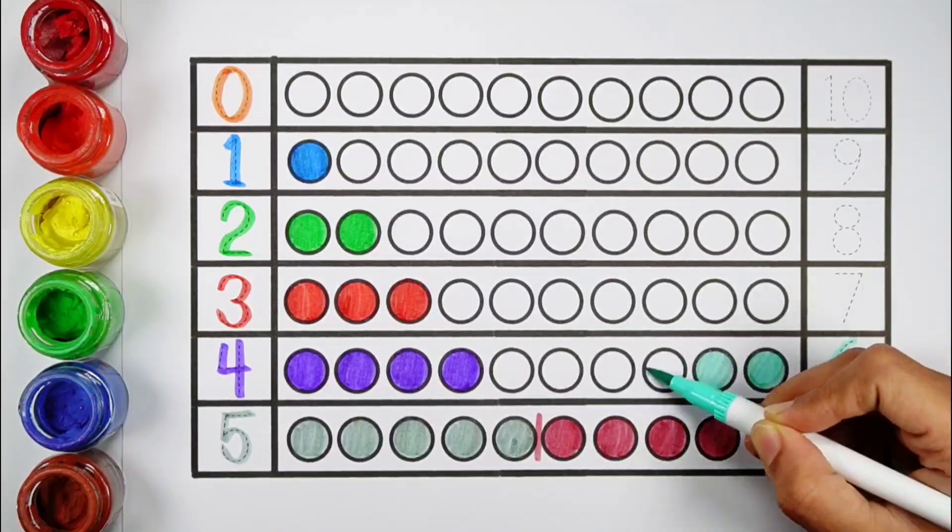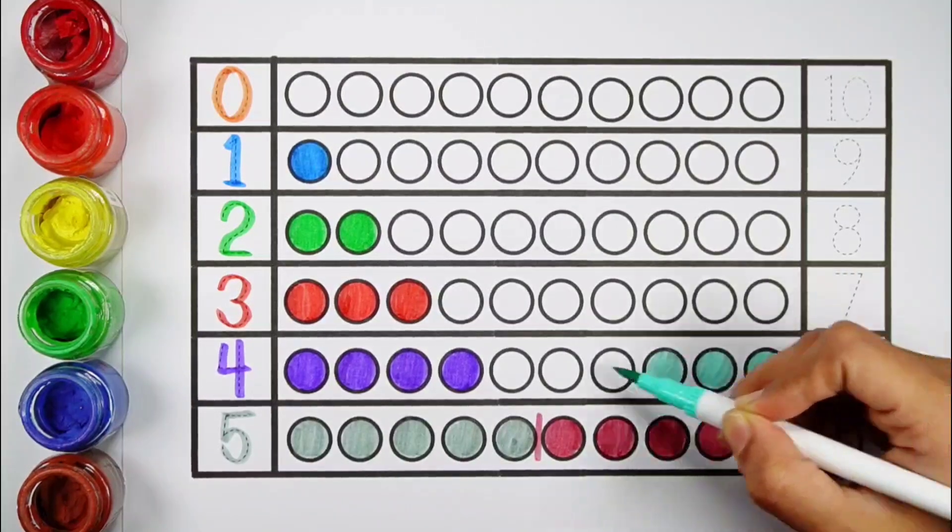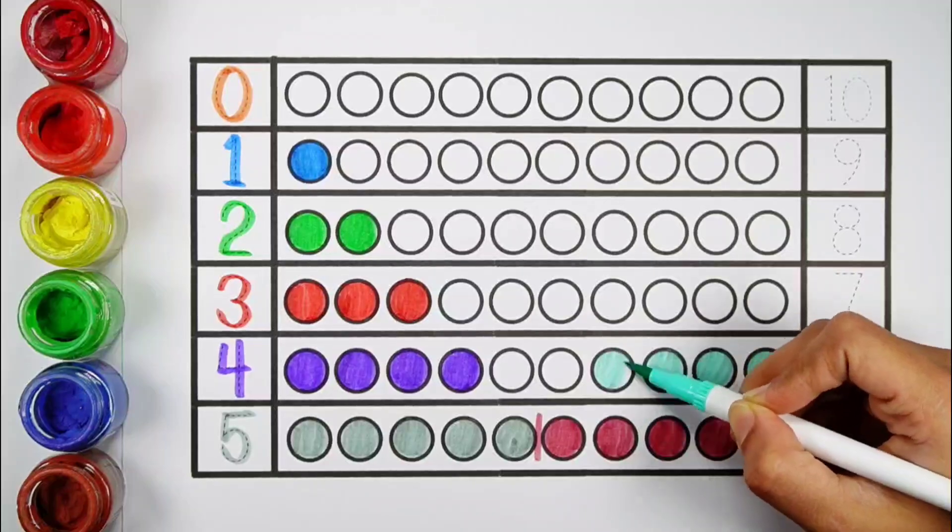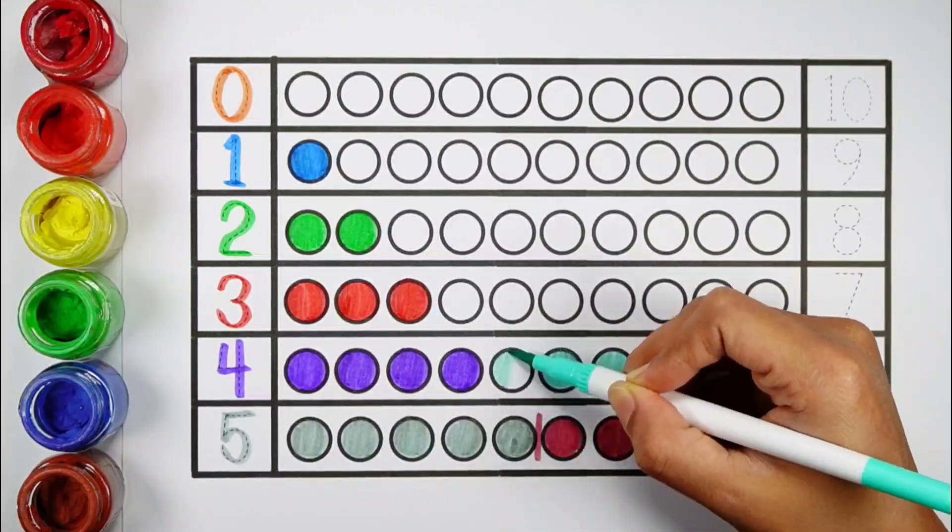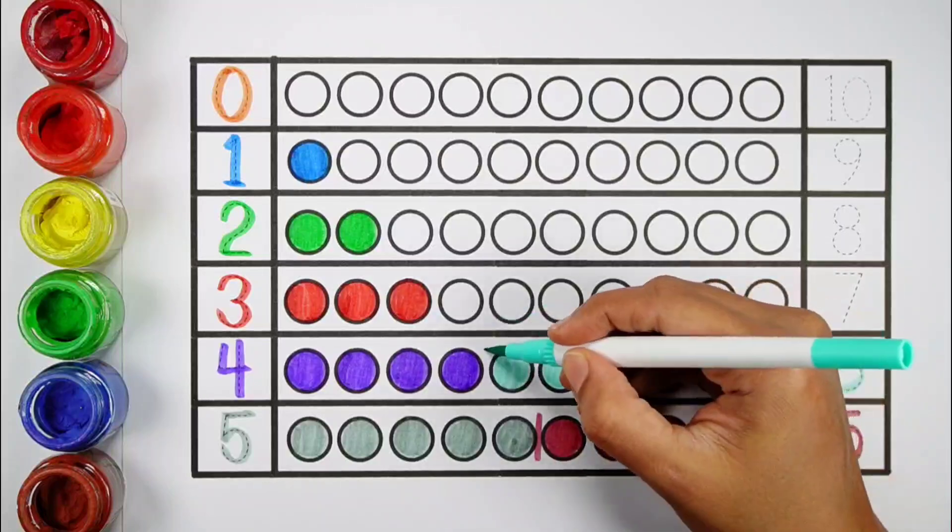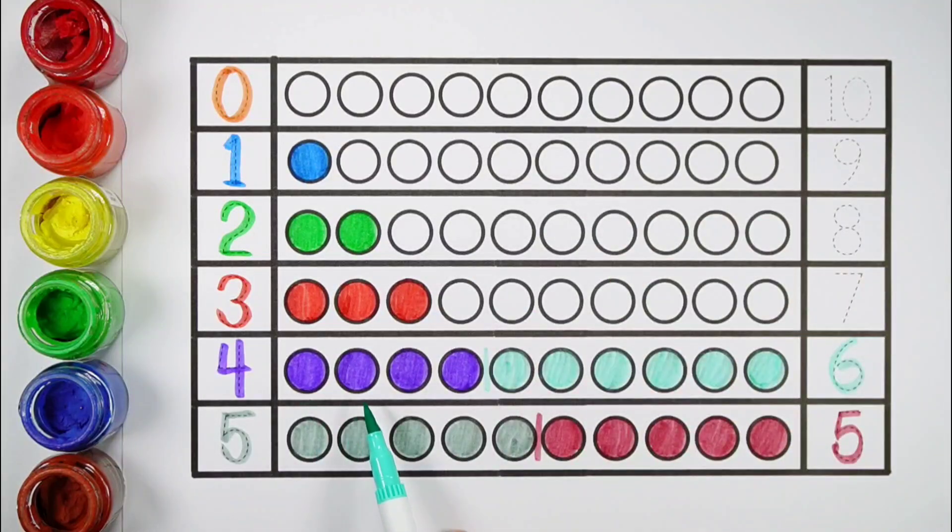1, 2, 3, 4, 5, 6, 6 bolts, 1, 2, 3, 4, 5, 6, 6 bolts, 1, 2, 3, 4, 5, 6, 7, 8, 9, 10